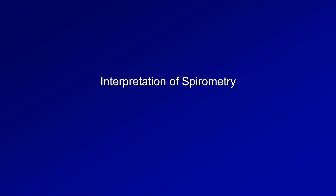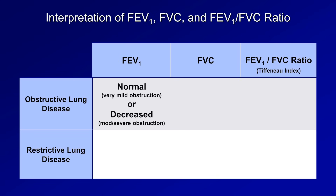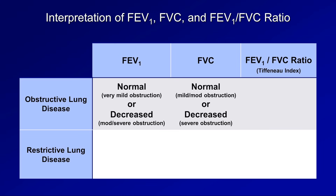Spirometry helps with diagnosis by comparing FEV1, FVC, and the FEV1 to FVC ratio for obstructive and restrictive lung disease. In obstructive lung disease — for example, COPD — the FEV1 can be normal in very mild obstruction but is almost always decreased, since constricted or obstructed airways make it take longer to push air through. The FVC will be normal in mild or moderate obstruction; however, for reasons related to lung mechanics, the FVC decreases with more severe degrees of obstruction.